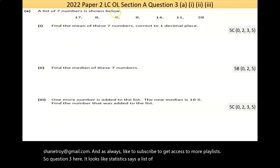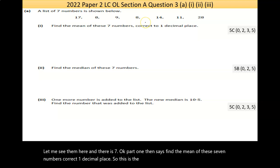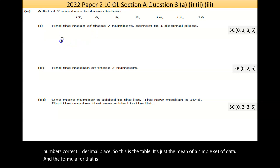So question 3 here, it looks like statistics. It says a list of 7 numbers is shown below. We see them here and there is 7. Part 1 then says find the mean of these 7 numbers, correct to 1 decimal place. So this isn't a table, it's just the mean of a simple set of data. And the formula for that is the mean is equal to the sum of the data divided by the number of data points.